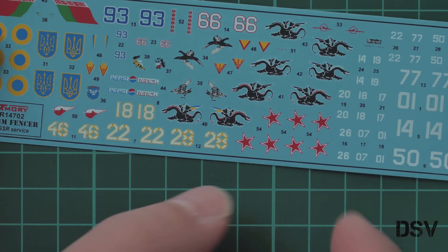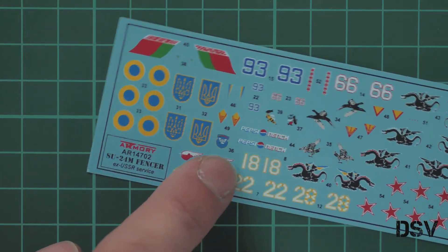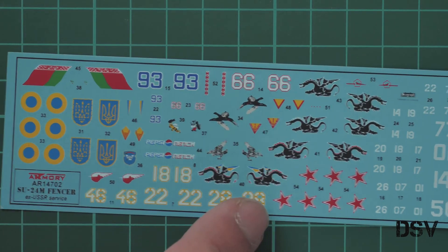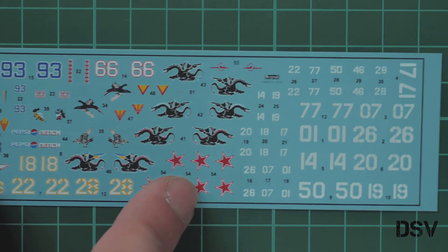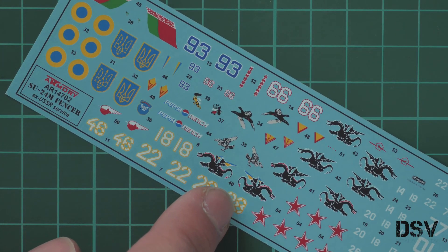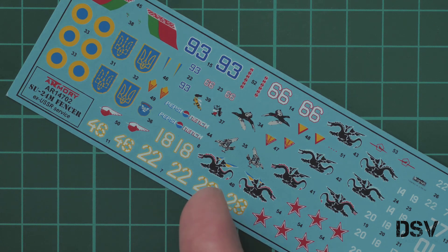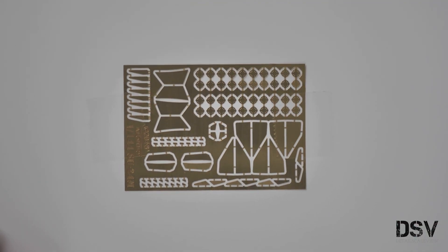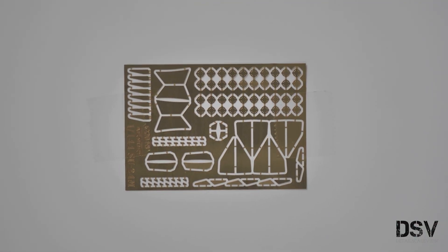Next we have the decals sheet. Let's not forget this is a 1/144 scale kit, so one decals sheet is more than enough to fit all marking options. There are no stencils included, but we have the Pepsi logo. I'm just curious why it's included there. The last bonus is a small PE fret with various items for fine detailing.